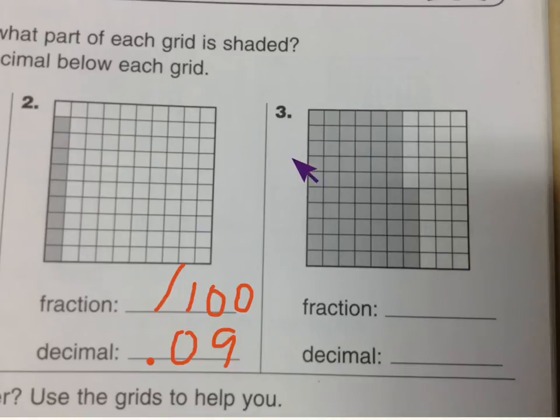Now, number three, again, we have a column not filled all the way in. So we can't go by tenths. We have to go by every little box in here, which means hundreds. So for your fraction, you're going to have some number out of 100. And I'm going to let you try to figure the rest of that out on your own.